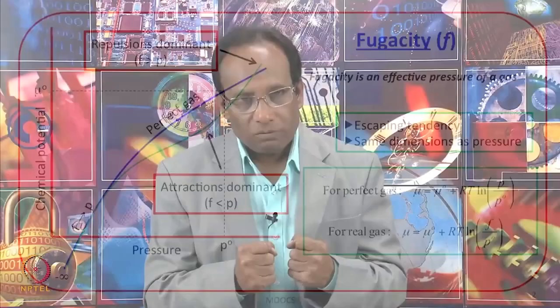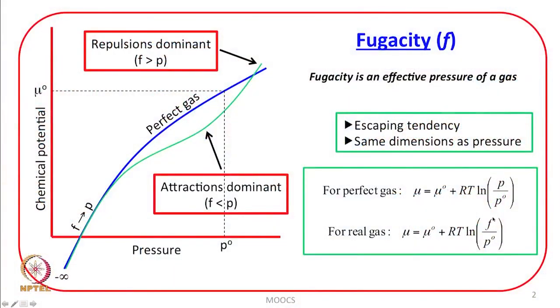When you further increase the pressure and molecules are almost touching each other, repulsive interactions begin. When interactions are repulsive, the escaping tendency of the gas molecules is greater because they repel each other. So if the escaping tendency F becomes more than P, the chemical potential for the real gas will become higher than the chemical potential for a perfect gas — and that is what is seen in the figure.